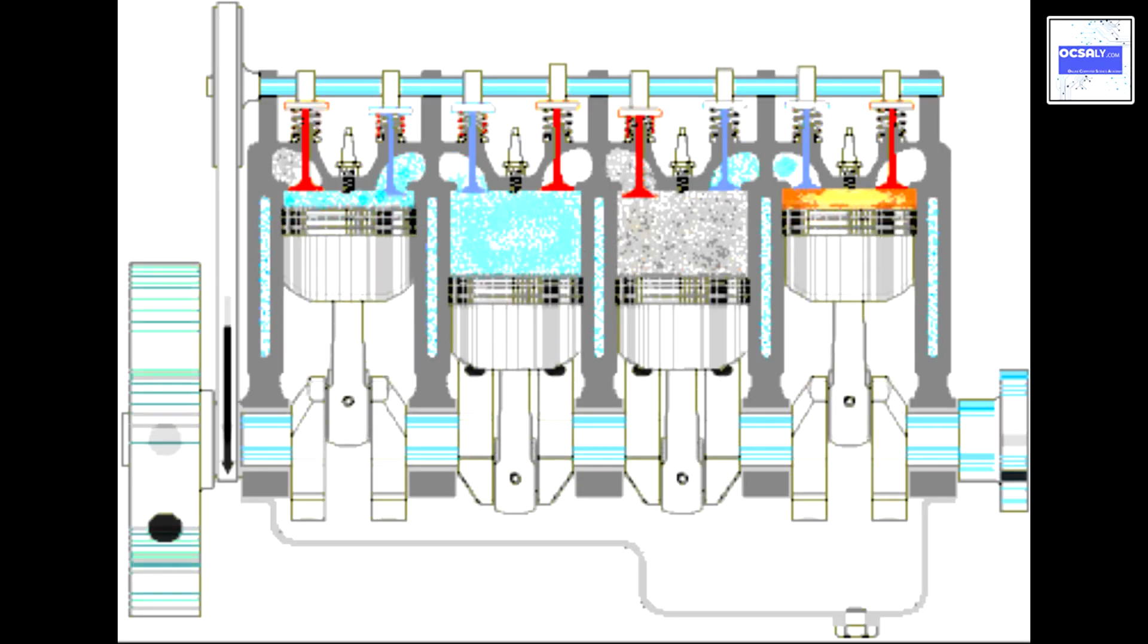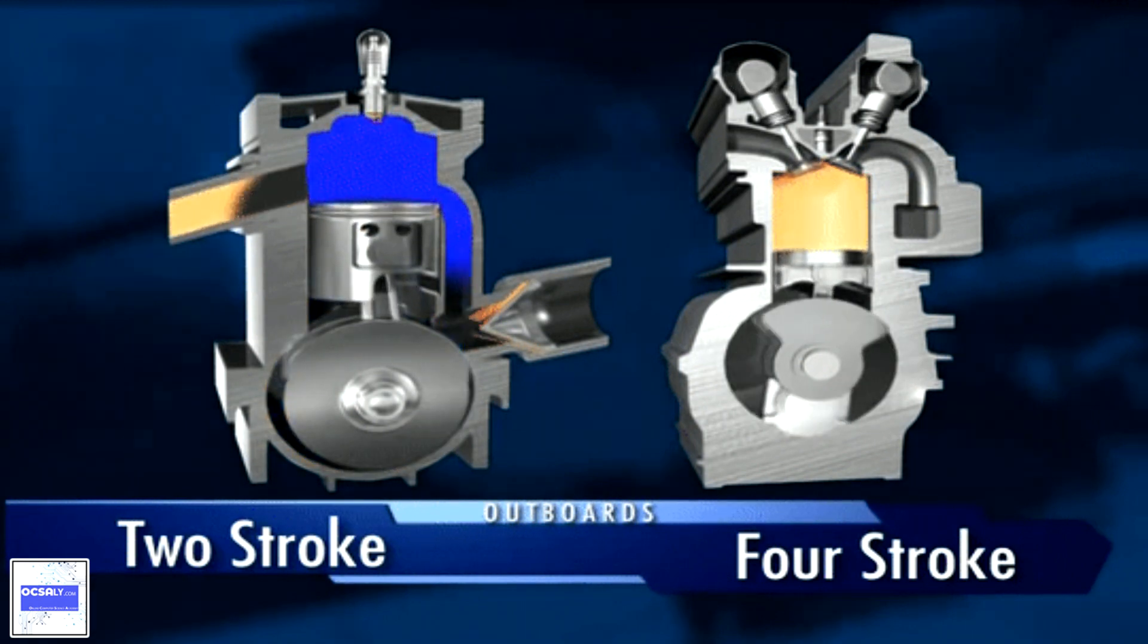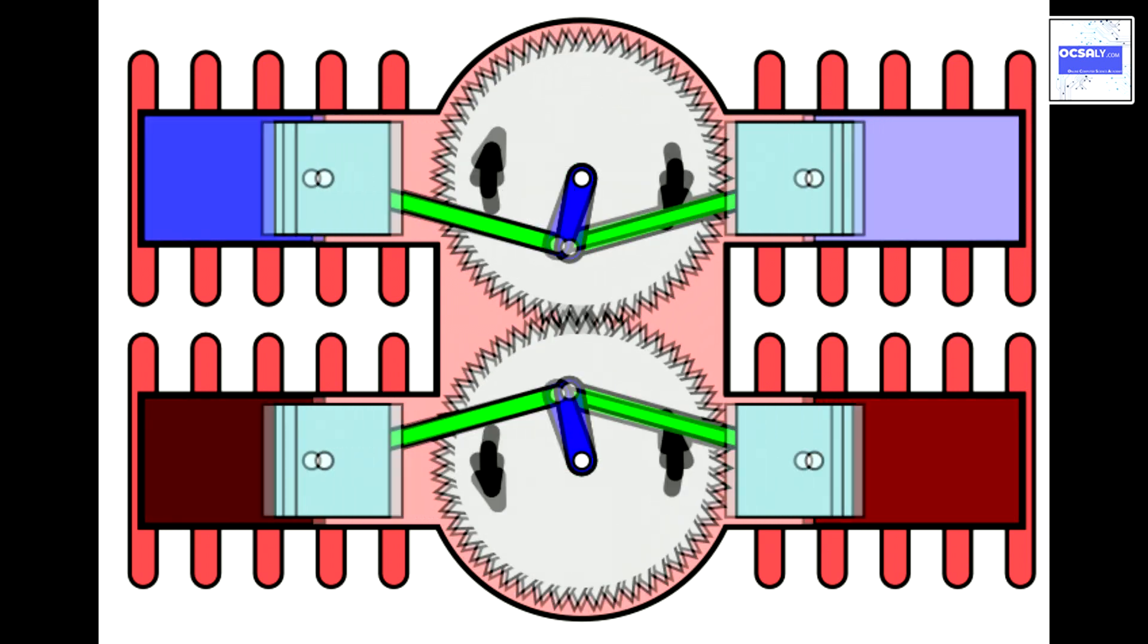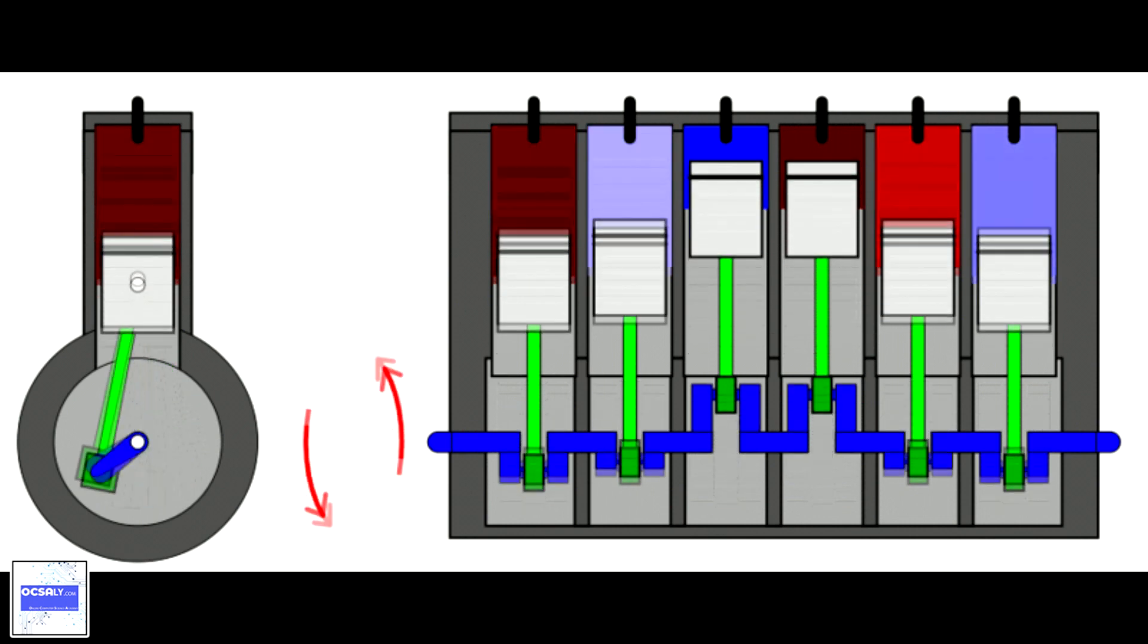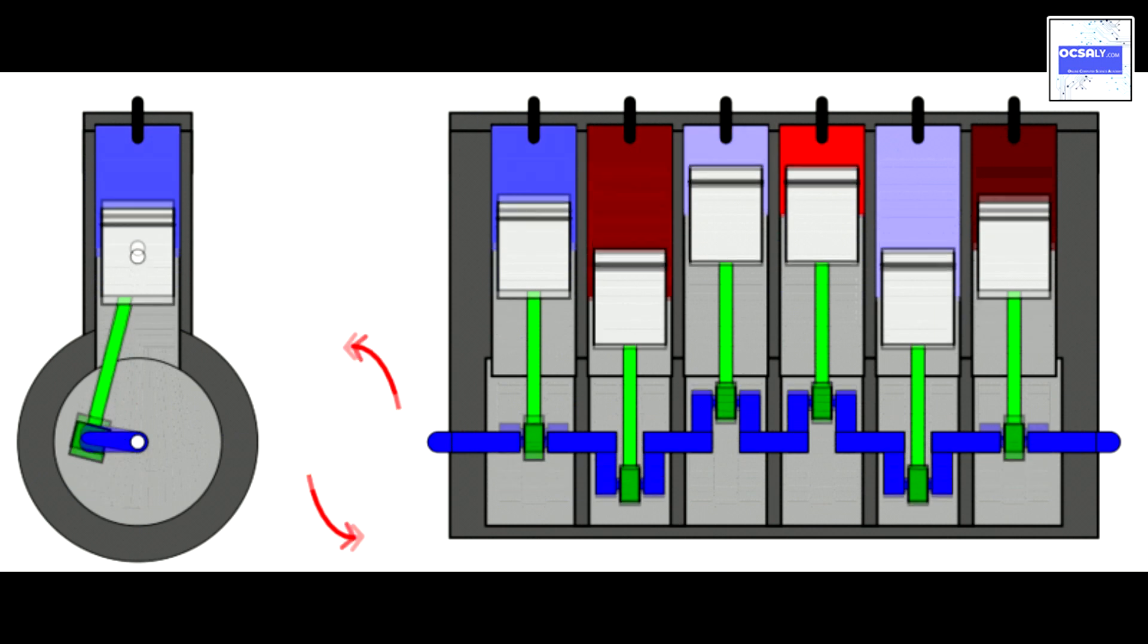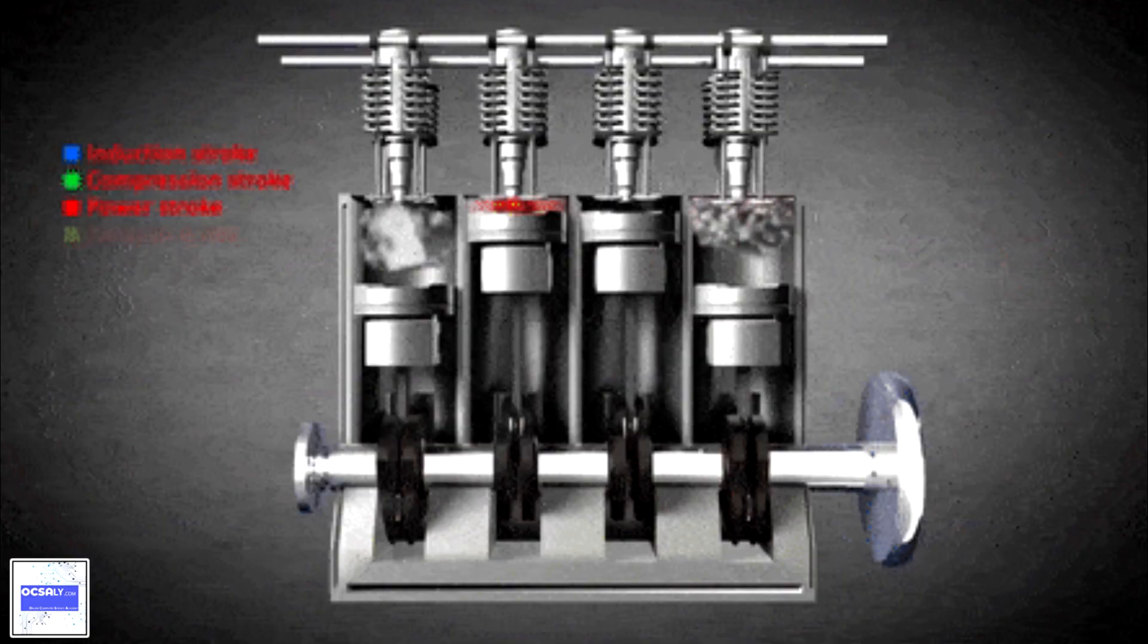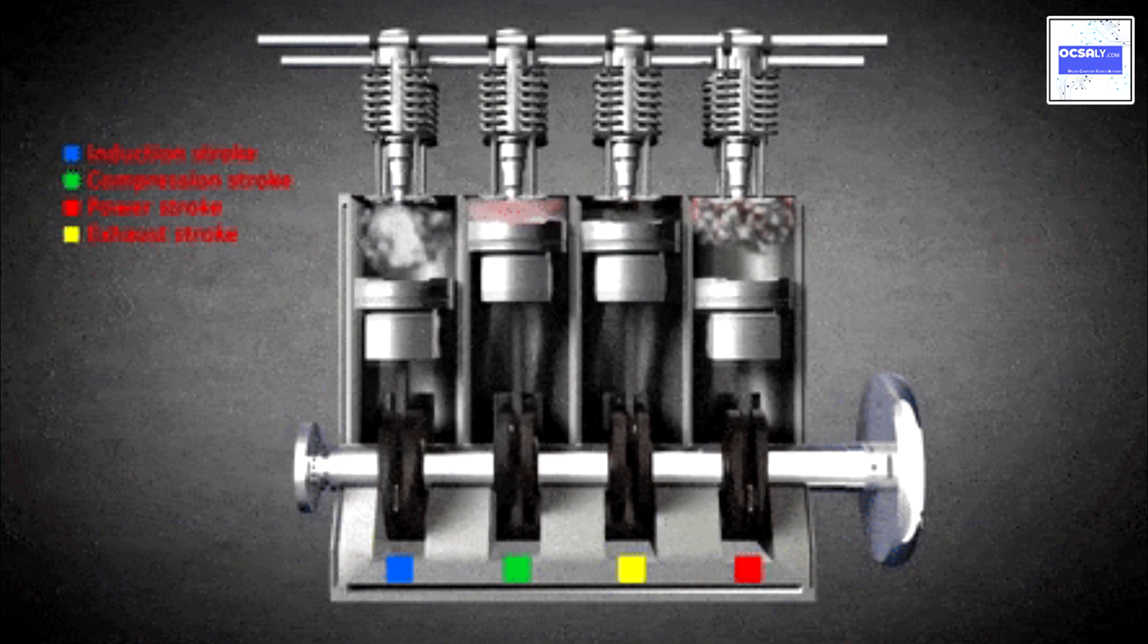Second, compression. This stroke begins at bottom dead center or just at the end of the suction stroke and ends at top dead center. In this stroke, the piston compresses the air-fuel mixture in preparation for ignition during the power stroke. Both the intake and exhaust valves are closed during this stage.